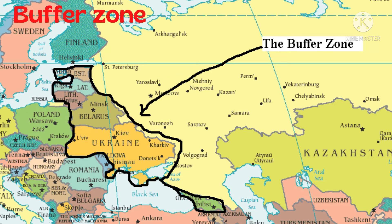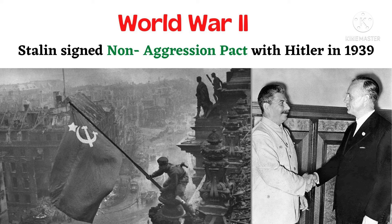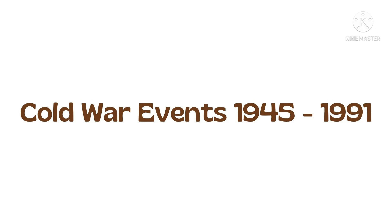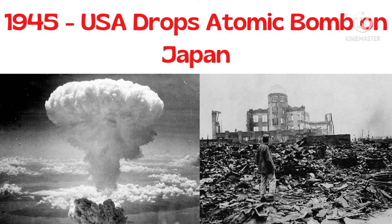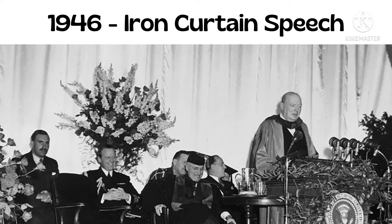Cold War events, 1945 to 1991. In 1945, the Yalta Conference decided what to do with Germany after World War Two — it was split into four controlled areas, with Berlin also divided. In 1945, the USA dropped atomic bombs on Japan, killing 220,000 Japanese in three days. The Russians worried that the next bomb would be dropped on them.